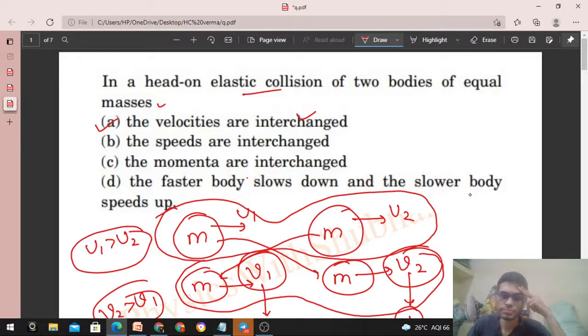So if velocities are exchanged then option A is correct. Speeds are interchanged. If velocity is exchanged then speed is nothing but the magnitude of velocity. Means if the full velocity is interchanged then its magnitude is also interchanged. So option B is also correct.